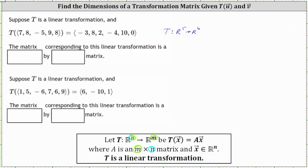And M is the number of rows in the transformation matrix. So in our case, notice how N is equal to five and M is equal to six. And therefore the transformation matrix is a six by five matrix.